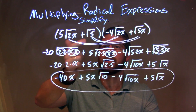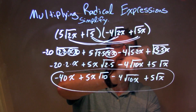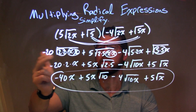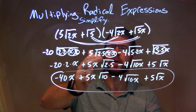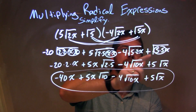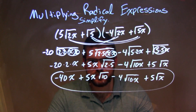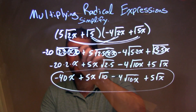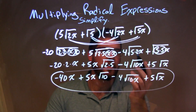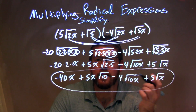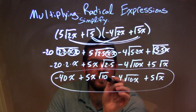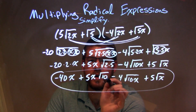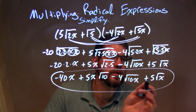Let's recap. We were given 5 square root of 2x plus square root of 5, times minus 4 square root of 2x plus square root of 5x. All parts of the first parentheses get multiplied by all parts of the second parentheses, giving us minus 20 times the square root of 2·2·x·x, plus 5 times the square root of 2·5·x·x, minus 4 times the square root of 5·2x, plus the square root of 5·5x. Simplifying: pairs come outside, 5 times 2 simplifies to 10, and minus 20 times 2 gives minus 40. Final answer: minus 40x plus 5x square root of 10, minus 4 square root of 10x plus 5 square root of x.